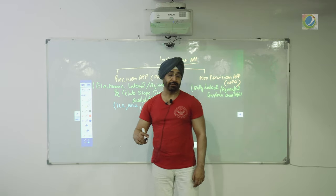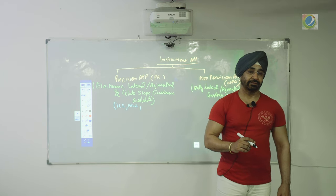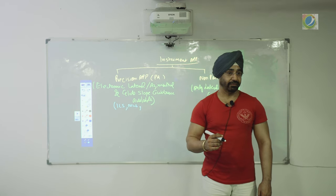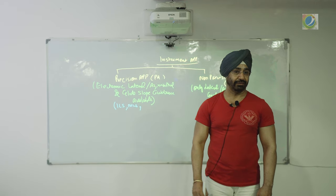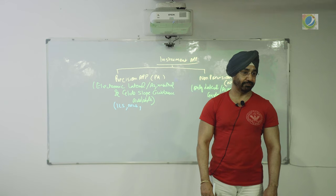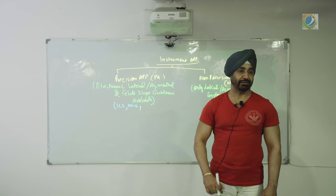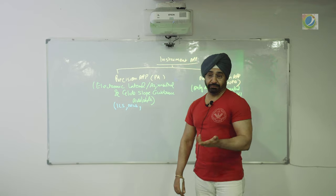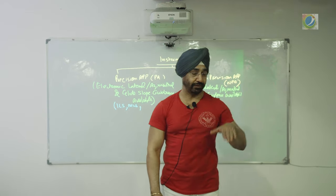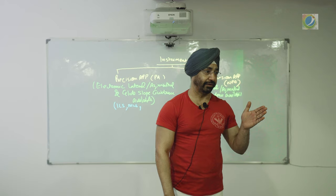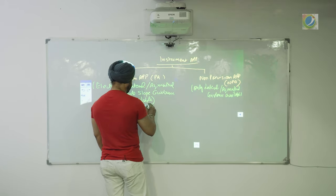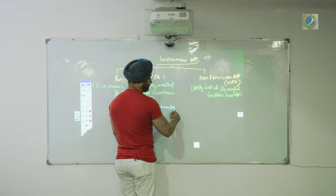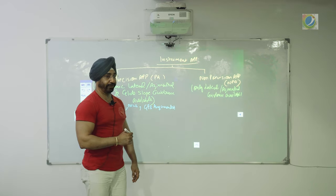In GPS approaches, with augmentation systems — you are yet to do GAGAN — you do not need ILS or any ground-based equipment. With a GPS augmentation system, up to CAT 1 approach is practically being done, because you can have both vertical guidance and lateral guidance. So you have precision approaches that are GPS-augmented. Pure GPS you cannot use — it must be an augmentation system.